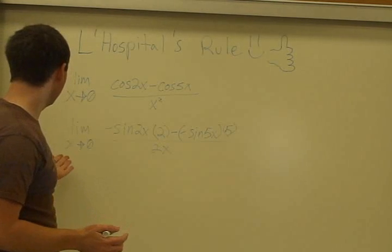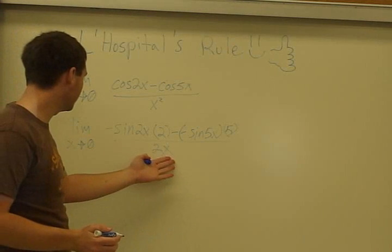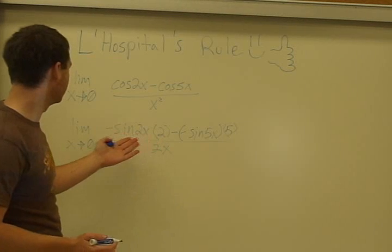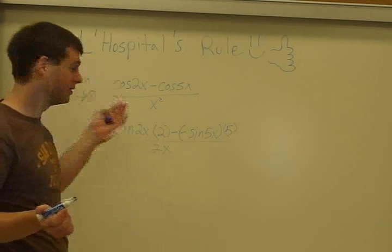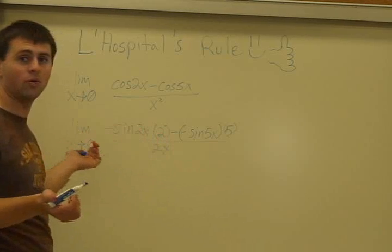So we're going to look at this and say, wow, as 0 approaches x in this instance, this is going to be 0 again. And then this sine of 2x is yet again going to be 0, because the sine of 0 times 2 equals 0. So that's 0 over 0 again.